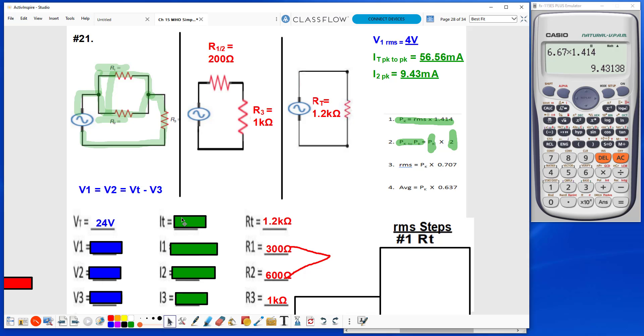My next step, I can find It by taking Vt divided by Rt. It tells me 20 milliamps. And I understand that since R3 is on the main branch, and all the current must flow through R3, that I3 will also be 20 milliamps. So we figured this out, It and I3 were the same.